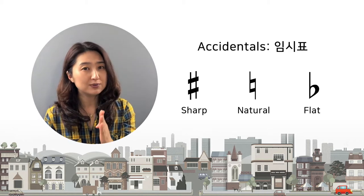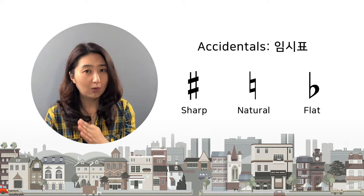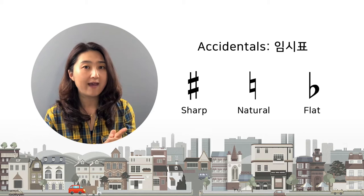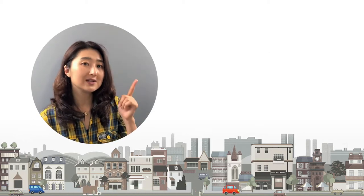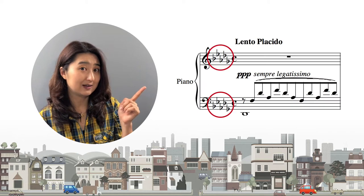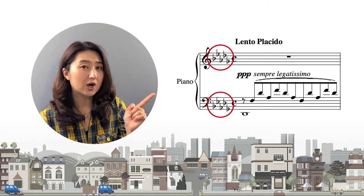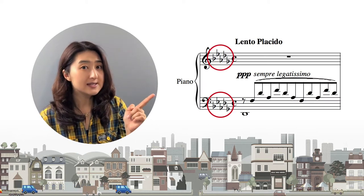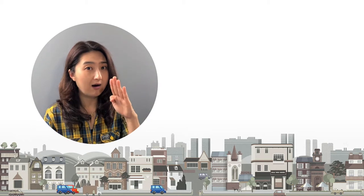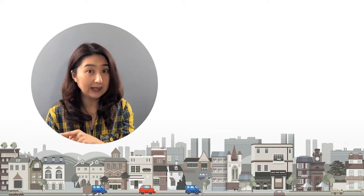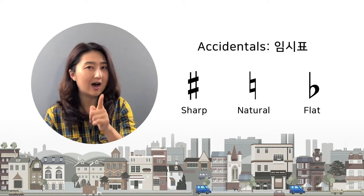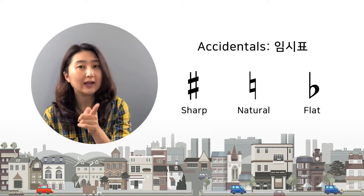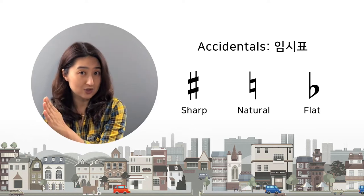If you want to put sharps and flats throughout the entire song, you have to place them before the time signature — that's the key signature. But if sharps, flats, or naturals appear in the music during playing, we call that an accidental, because it happens only on that note and is only good for that measure.